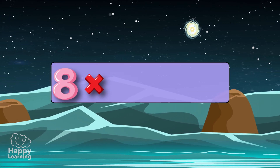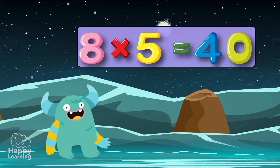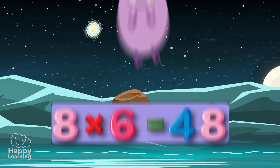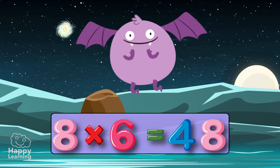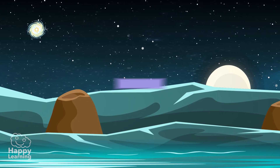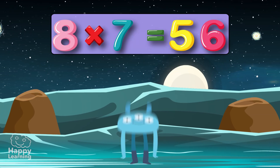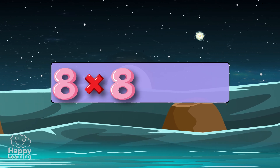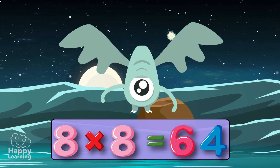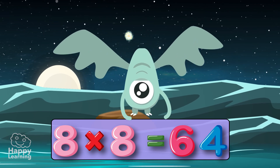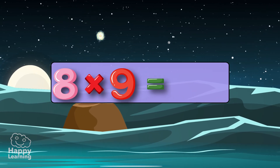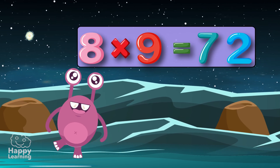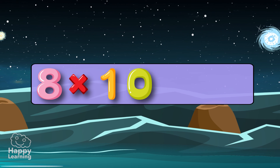Eight times five is forty. Eight times six is forty-eight. Eight times seven is fifty-six. Eight times eight is sixty-four. Eight times nine is seventy-two. Eight times ten is eighty.